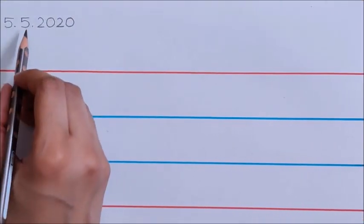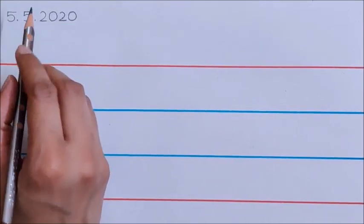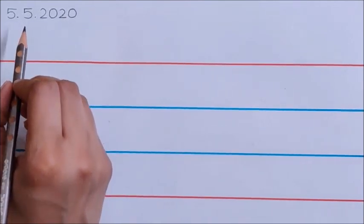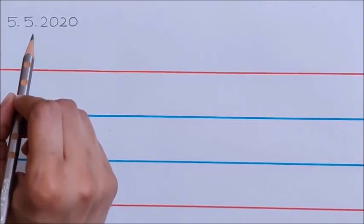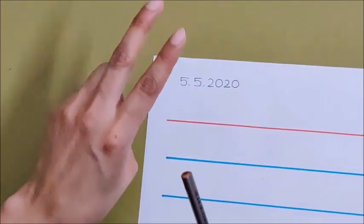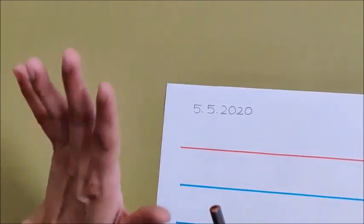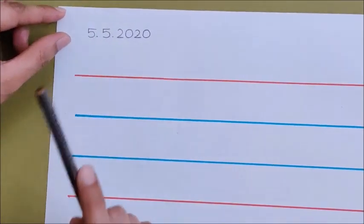Now children tell me why did I write here 5? Because May has started. Month of May has started, and May is 5th month. January, February, March, April, May. And May is the 5th month. That is why I have written here 5.